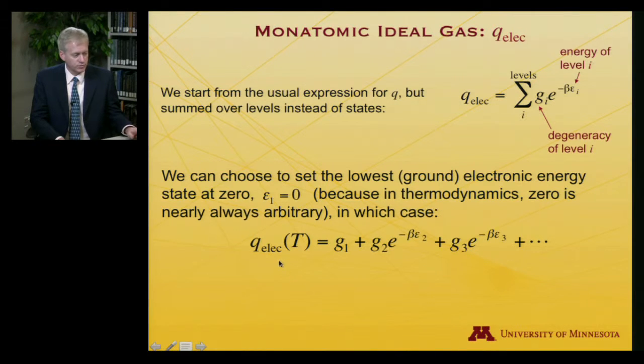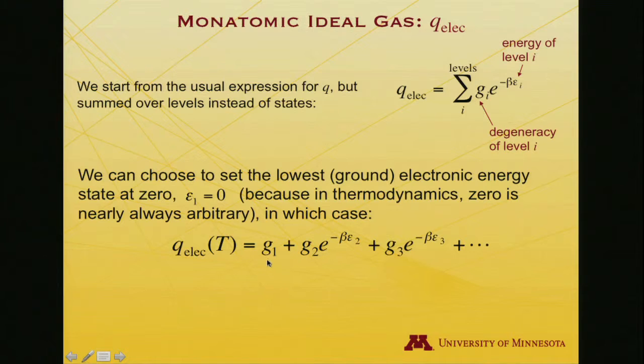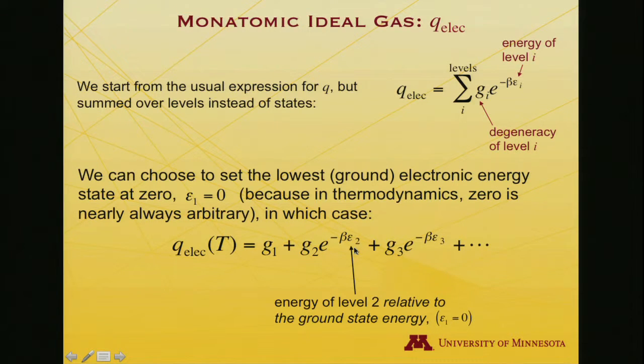And in that case, the electronic partition function would be written as we sum over the first level: it's the degeneracy of the ground state times e to the minus beta times zero. So that'll just be one, and the first term in the partition function is just the ground state degeneracy. The second term will be the degeneracy of the second state, the first excited state, times the exponential of minus beta times its energy relative to the ground state energy. So it's actually the energy separation between the first excited state and the ground state.